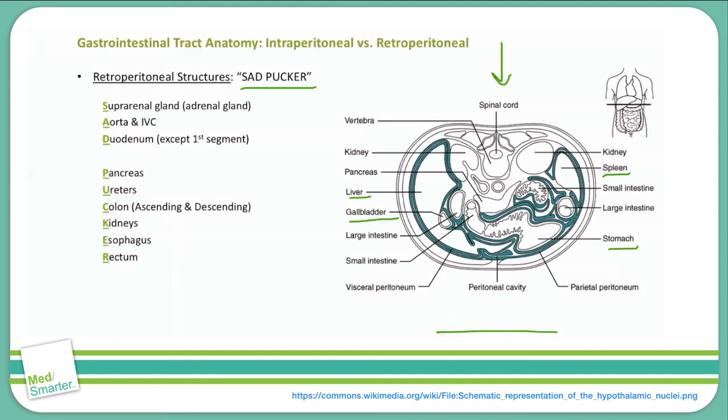You'll often get questions about a collection of blood or air in the peritoneum or in the retroperitoneal space, which then asks you to pick out an organ that may have been responsible. Just keep in mind your SAD PUCKER mnemonic and you won't have any trouble answering these questions.